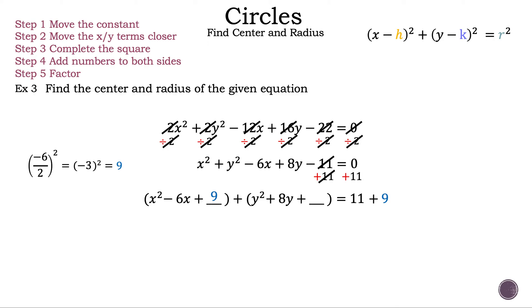Now let's complete the square for our y quadratic. First we need to find the b term, which is positive 8. We need to divide positive 8 by 2 and square it. 8 divided by 2 is 4, and 4 squared is 16. Now let's add 16 back into our equation. Remember, if we add a 16 to the left-hand side we have to add a 16 to the right-hand side so we keep the equation equal. And that is why we added a blank spot for each quadratic.